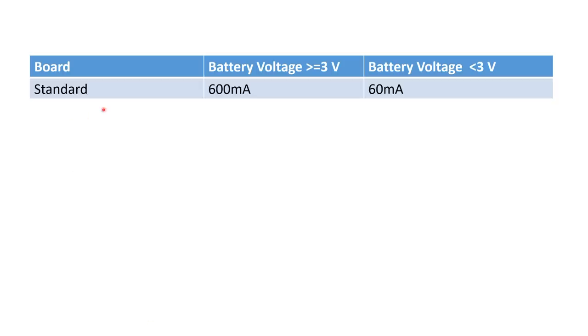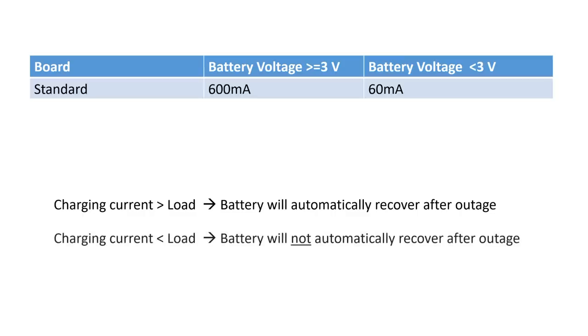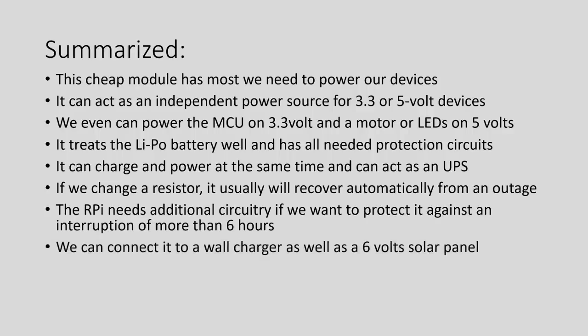The TP4056 on the standard board delivers 600mA if the battery voltage is above 3V and only 60mA if it is below 3V. The board will automatically recover after an outage if this current is higher than the load. You have to disconnect the load if it is bigger than the 60mA. If we change R2 to 1.2kΩ, the respective currents are 1000mA and 100mA. We can connect it to a wall charger as well as a 6V solar panel.